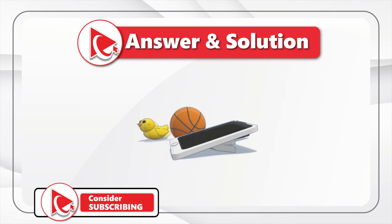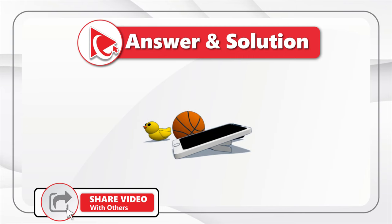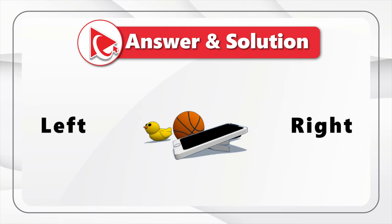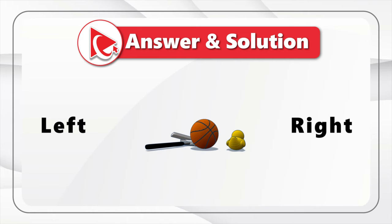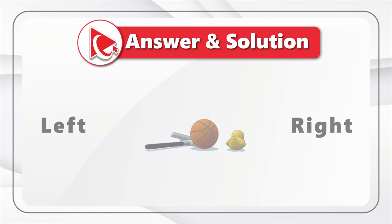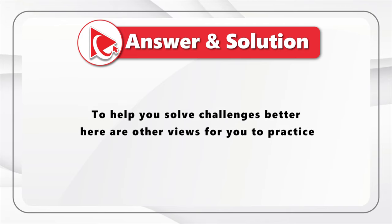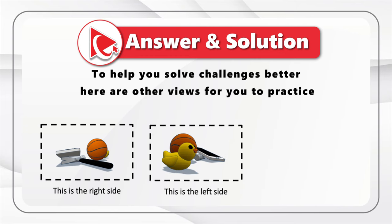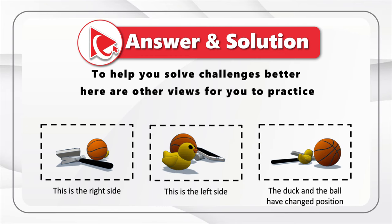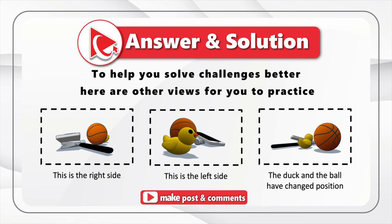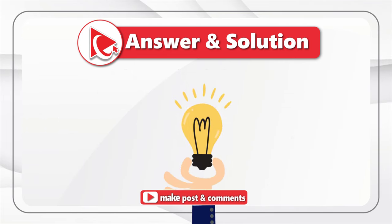So let's go back to the duck. If you look at the original image, you see that the duck is looking to the left and is on the left side of the ball. This means that if we look from the opposite side, the duck will be looking to the right and will be on the right side of the ball. We frequently see these types of questions on tests, so here are views of these objects from different sides — from the right, from the left, and with the duck and ball having changed position.